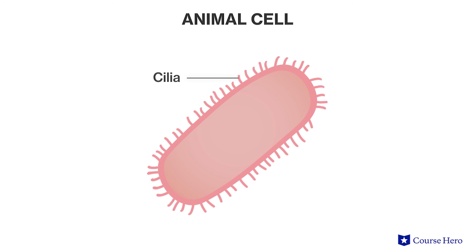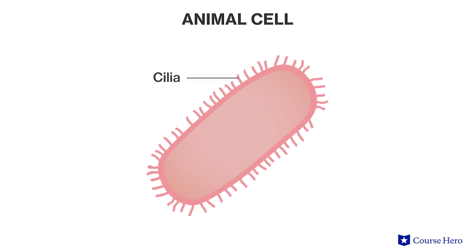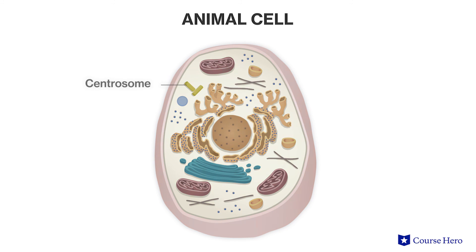Cilia are tiny, hair-like structures found on the surface of the cells lining the human respiratory tract, where they help remove debris from the lungs. Another structure that is composed of microtubules and is not found in higher plants is the centrosome. These structures play a role in cell division as they organize the microtubules that separate chromosomes during cell division.